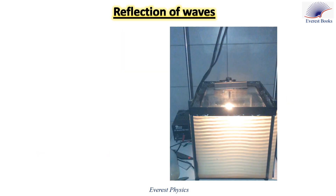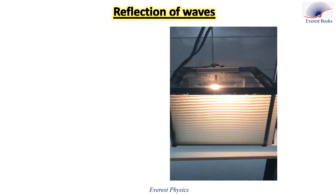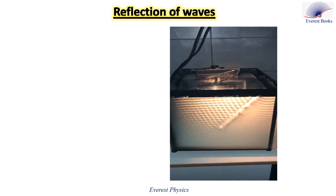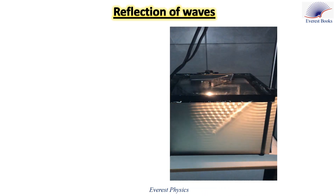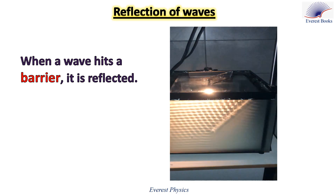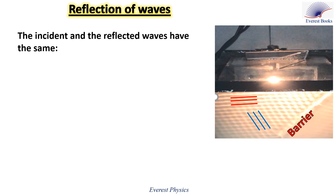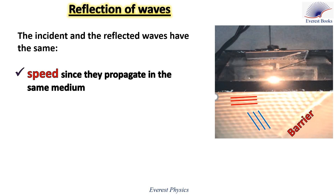What happens when a wave hits a barrier? Observe this experiment. In this ripple tank, the straight bar dipper vibrates and creates ripples traveling on the surface of the water, shown through a vertical screen. When we place a straight barrier, the wave reaches the barrier and is reflected. In a snapshot of the incident and reflected waves, some incident ripples are marked red and some reflected ripples are marked blue. The incident and the reflected waves have the same speed since they propagate in the same medium.